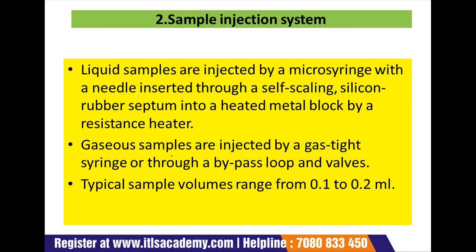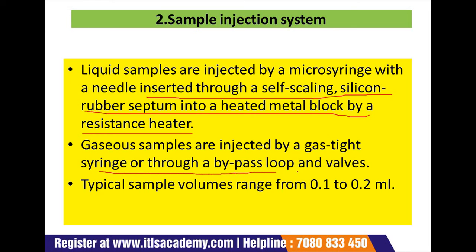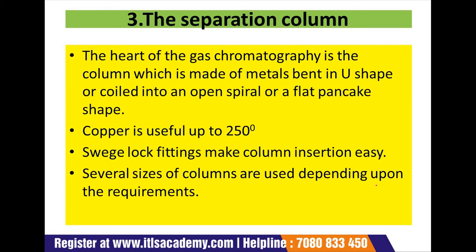In the sample injection system, liquid samples are injected by a microsyringe with a needle inserted through a self-sealing silicone rubber septum into a heated metal block by a resistance heater. Gaseous samples are injected by a gas-tight needle into a sampling tube, or through a bypass loop and valves. Typical sample volumes range from 0.1 to 0.2 ml.